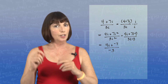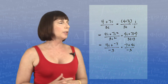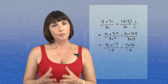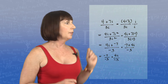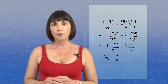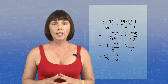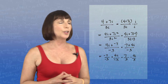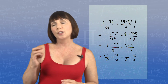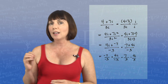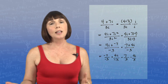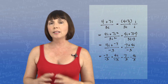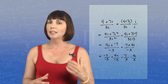Rearranging, we get negative 7 plus 4i over negative 3, which equals negative 7 over negative 3 plus 4i over negative 3, and that becomes 7 thirds minus 4 thirds i. So once again, we have gotten rid of that i in the denominator to get our answer.